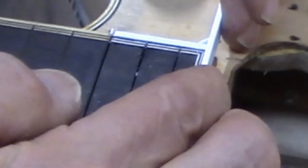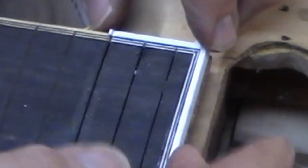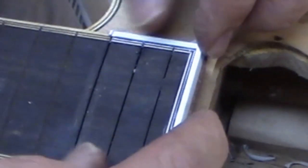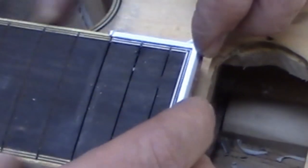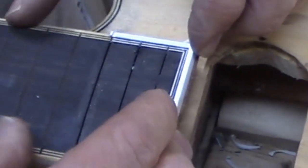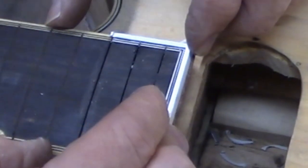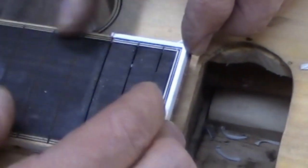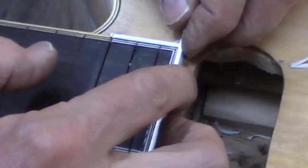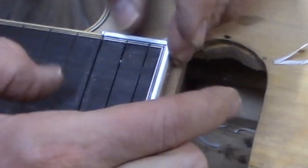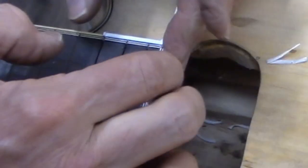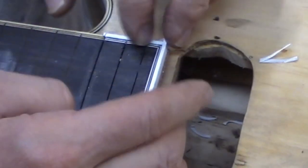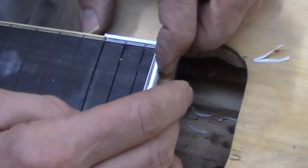Now obviously there's a huge color contrast between the brand new white binding and the 50 year old white binding. So before the finish goes on the guitar we'll be doing something to stain the new bindings to make them look a little bit older.